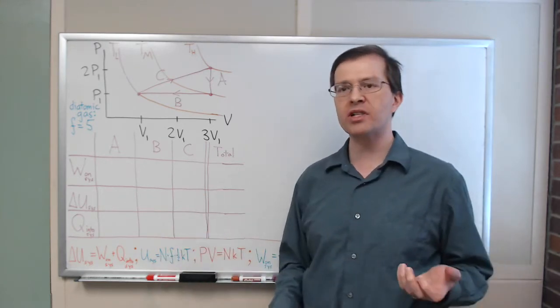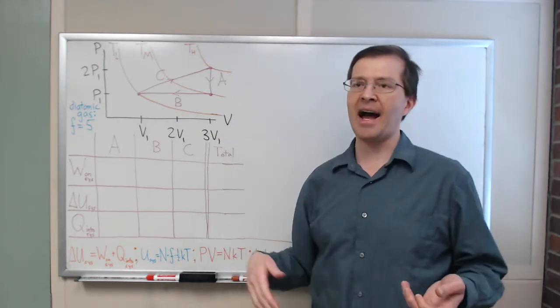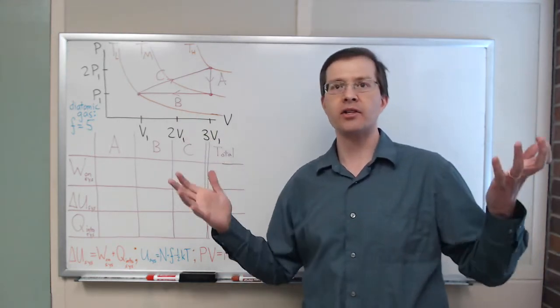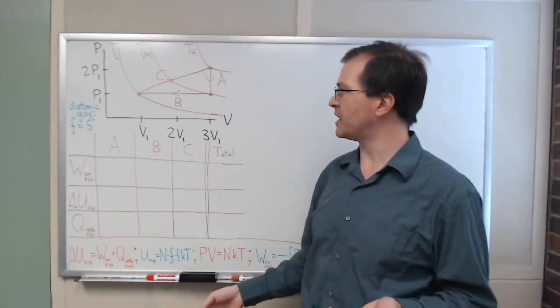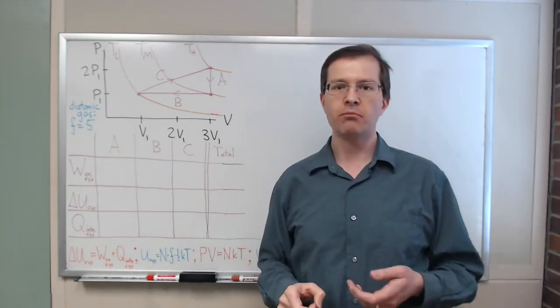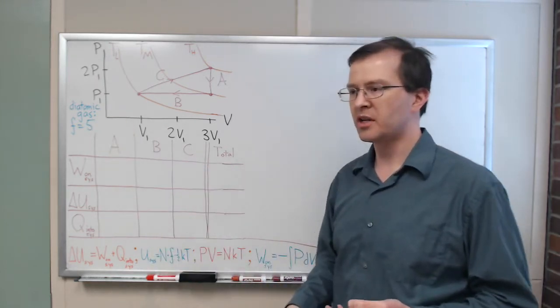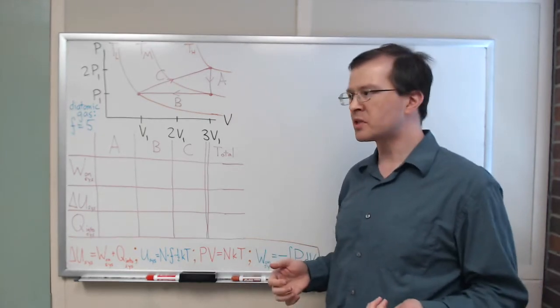F is the number of degrees of freedom per molecule. In general, we're going to consider here a diatomic gas. Ordinary air is a pretty good approximation to a diatomic gas. And so, we're going to assume that it's a diatomic gas that has five degrees of freedom per molecule and N molecules. So, that's another tool we're going to use along the way.